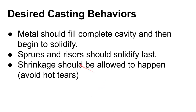Here is what you want to happen in a casting: first you want the molten metal to fill the entire casting cavity, and then you want solidification to begin — you don't want the part solidifying as you're pouring. Last of all you want these supporting features — the sprues and risers — to solidify. This is where you feed the metal into the mold, and this is where you want to see the shrinkage marks and defects, because you're going to cut these off completely and remelt them; they won't be part of your finished product.